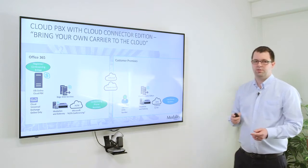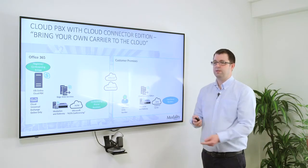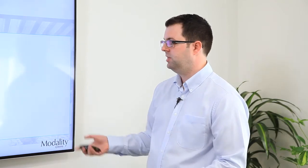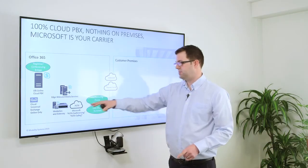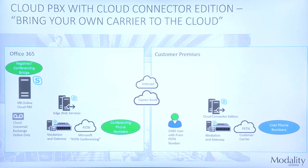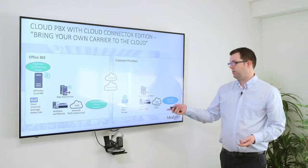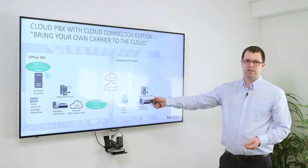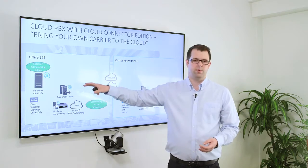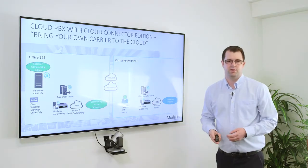You can mix and match the two. Say you've got London, New York, and France — London and New York can run off the pure cloud model, with all their services and PSTN in the cloud. But for France, where Microsoft PSTN calling isn't available yet, you might have a Cloud Connector Edition, a gateway, and a local French carrier. That still leverages all the benefits of the cloud where you can, while bringing your own PSTN where you can't.